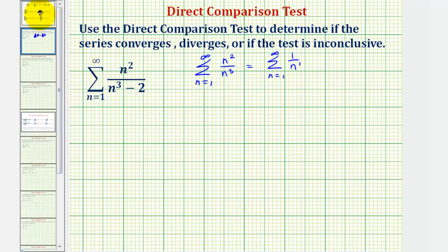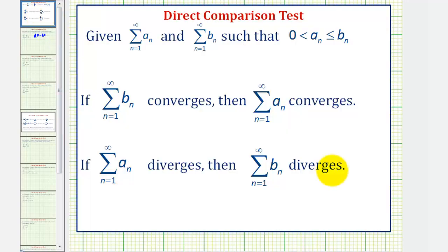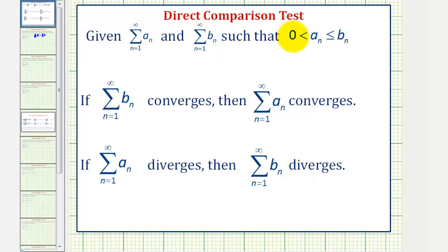So now if we take a look at our notes, the case that we just discussed is this case here, where if we have a known diverging series, and if we can show the terms of this series given by b sub n are greater than or equal to the terms of the diverging series, our series also diverges. To show a series converges using the comparison test, we would need to know that a series converges, and if we can show the terms of our series given by a sub n are less than or equal to the terms of the converging series, our series would also converge.